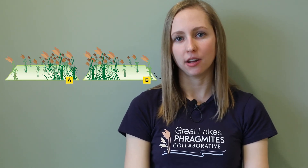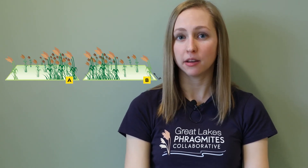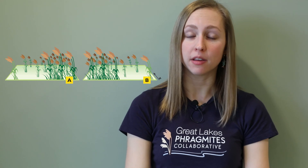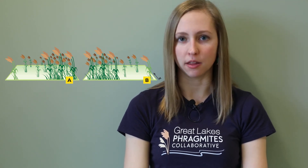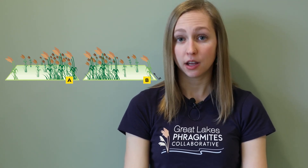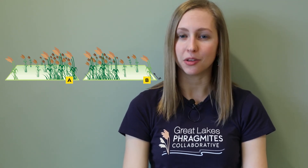Next, you'll complete the Enrollment Questionnaire. Start by checking for a stem density gradient where Phragmites is more dense in one area of the management unit than others. If you notice a stem density gradient, record the cardinal direction.